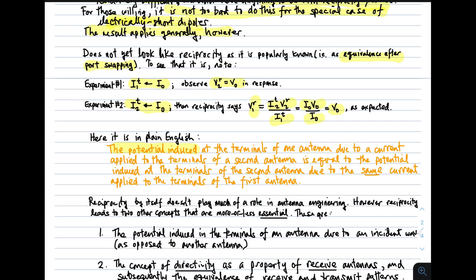It says the potential, that is the voltage, induced at the terminals of one antenna due to a current applied to the terminals of a second antenna is equal to the potential induced at the terminals of the second antenna due to the same current applied to the terminals of the first antenna. That's all there is to it.